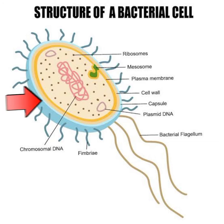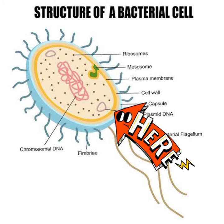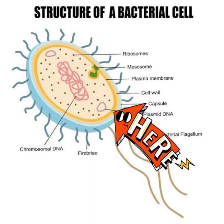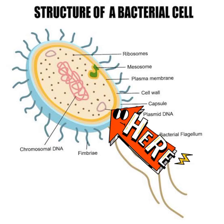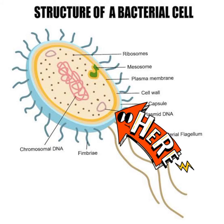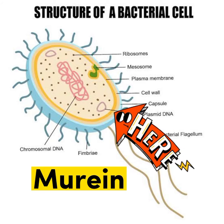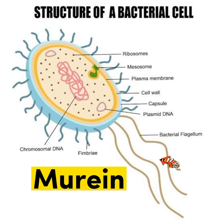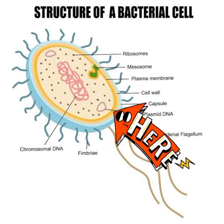Next to the capsule is the cell wall. The cell wall is the outermost layer in a bacterial cell, just like in plant cells, but its composition differs. In bacteria, the cell wall is made up of peptidoglycan, which consists of sugars and amino acids, also called murein. The cell wall gives shape to the cell and protects it from bursting due to osmotic pressure differences between the bacterial cell and the outside environment.